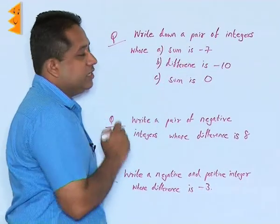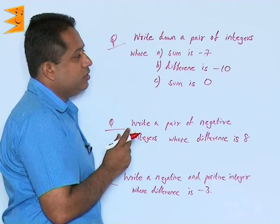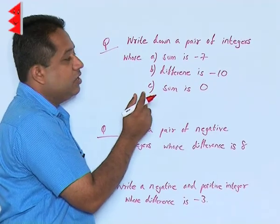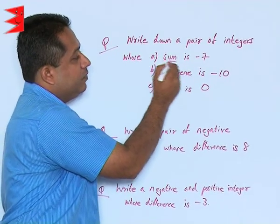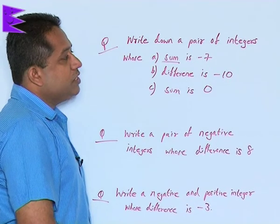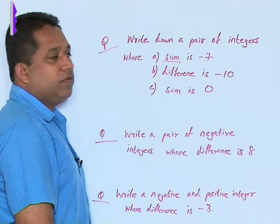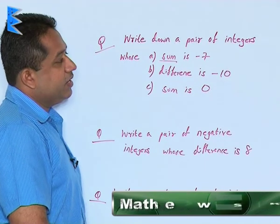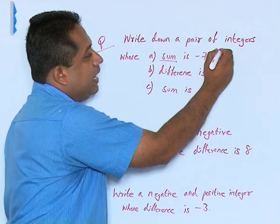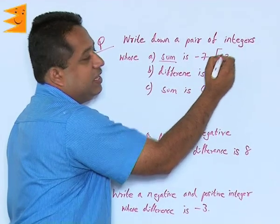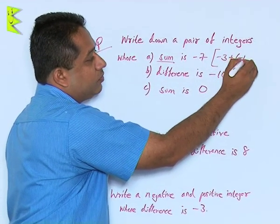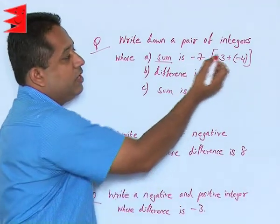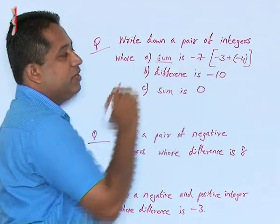Write down a pair of integers — that means we have to think of two integers whose sum is minus 7. We have to think of two integers that on adding give us minus 7. Which numbers, on adding, will give us minus 7? Integers can be positive or negative, so an example could be minus 3 added to minus 4. When we add minus 3 and minus 4, we know that gives us minus 7.